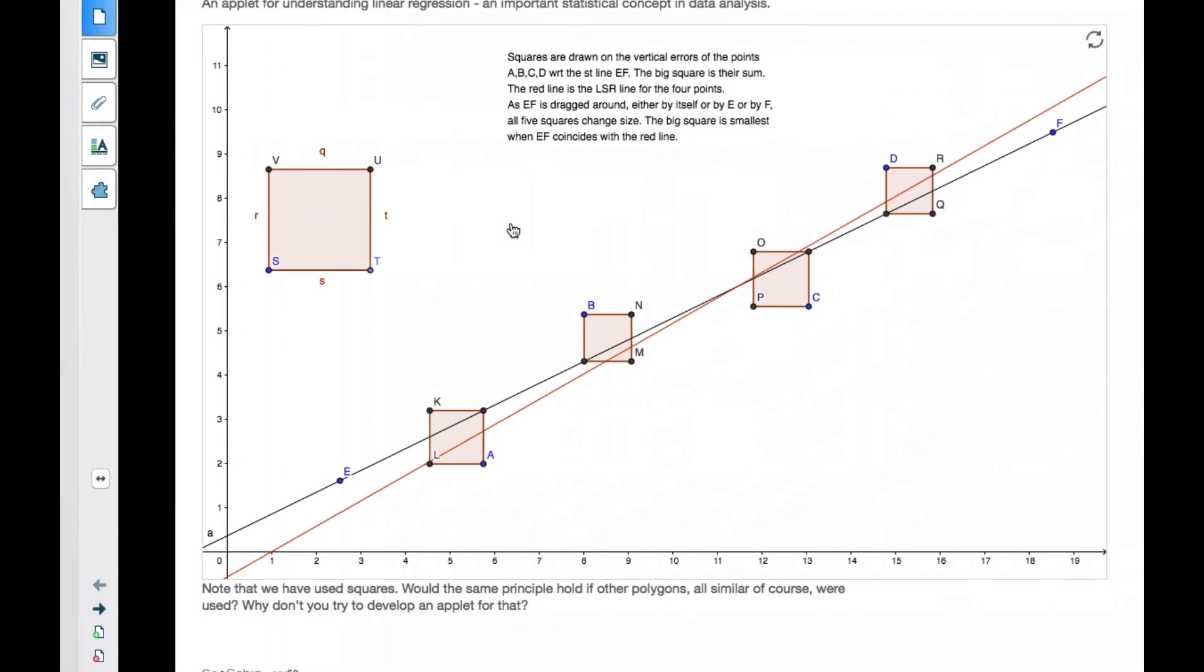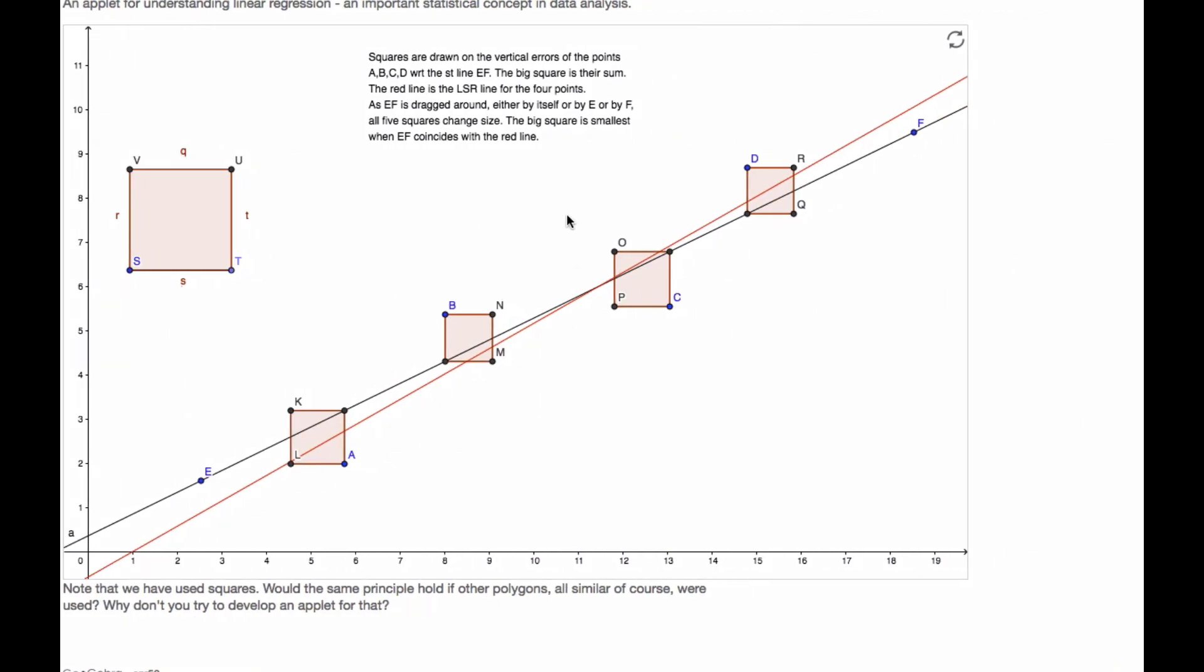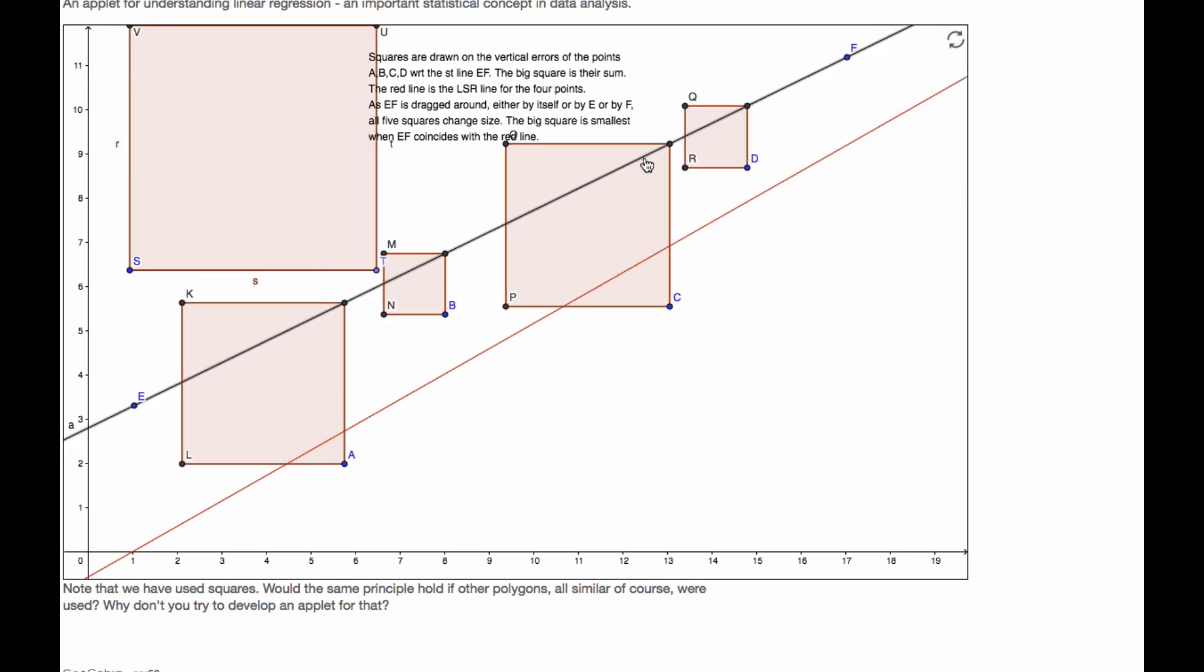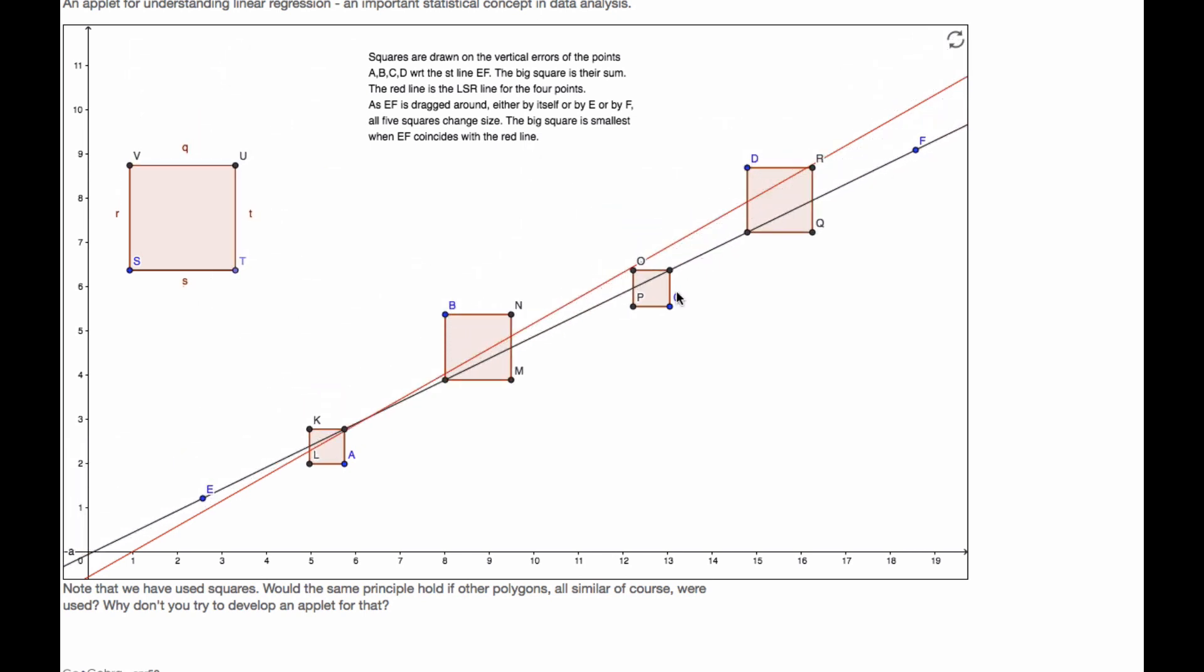If we go over this applet here, here's where it's all about least squares. So what we have here is A, B, C, and D are our data points, and we're trying to find a line that fits it best. I can take this black line and move it around.